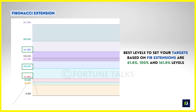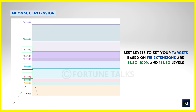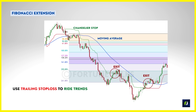There are some problems with Fibonacci extension tools. First, there's no way to know which exact extension level will provide support or resistance. Second, some levels may be ignored entirely by price. Third, determining which swing low to start from can be confusing when price consolidates and creates multiple highs or lows. There is no single right way to do it — with practice, you'll make better decisions picking swing points and use your discretion. You can also use trailing stop losses along with these levels, such as moving averages or ATR-based stops like Chandelier stops, to improve your odds of booking profit.